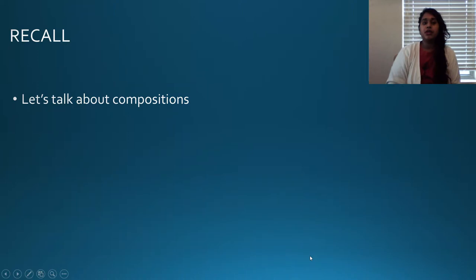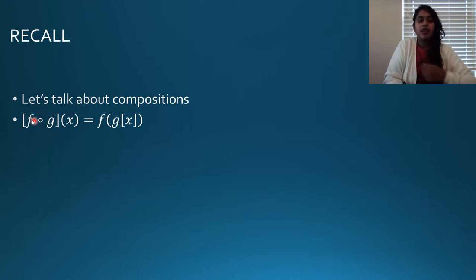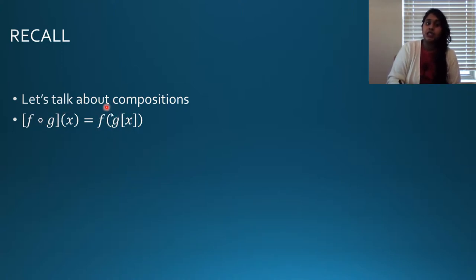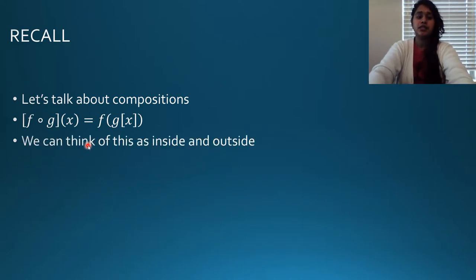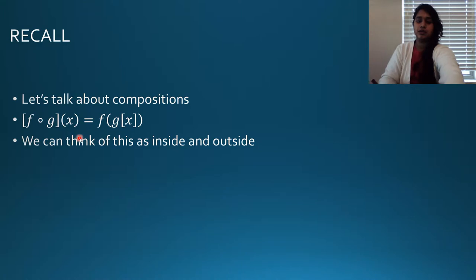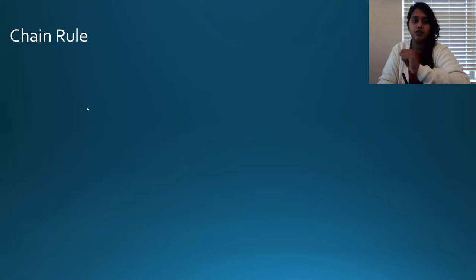In our recall, we're going to do composition work. What is a composition? It's just so that you can recognize its notation. F composed G is the same as F of G of X. Remember, these are not multiplication symbols. That parenthesis is a parameter — it means 'of,' the function of G of X. We can think of this as an inside-outside: G of X is inside, F is outside.